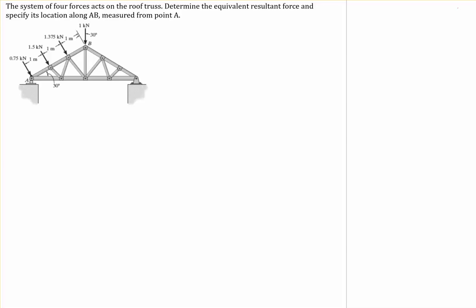In this problem, we need to find the equivalent force system that can be used to replace an existing force system. The existing force system consists of four forces. We need to find a replacement force system that can only consist of one force, but it is not allowed to have a couple moment. We don't know where the replacement force should be applied, but the constraint is that it must be applied along the line segment AB.